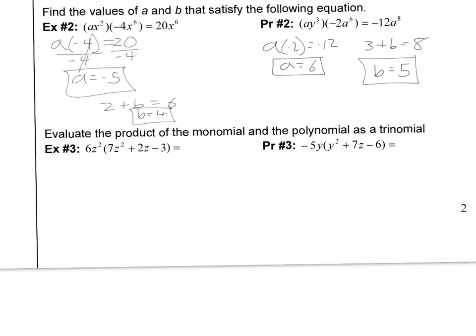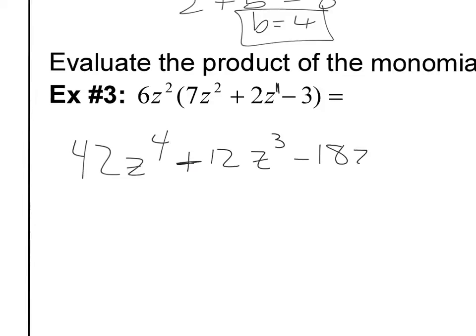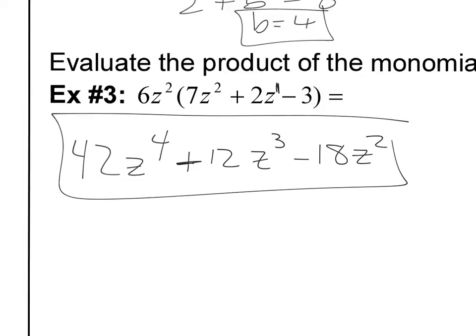Evaluate the product of the monomial and the polynomial as a trinomial. All we're going to do here is distribute this term to all of these terms. 6 times 7 is 42, and Z squared times Z squared gives me Z to the 4th. Now 6 times 2 is 12, and Z squared times Z gives me Z to the 3rd — because there's an imaginary 1 up there, so 2 plus 1 is 3. Now 6 times negative 3 is negative 18. There's no Z, so we just leave it as Z squared. And we are done.